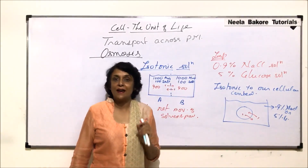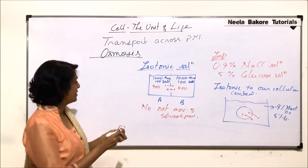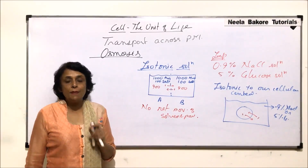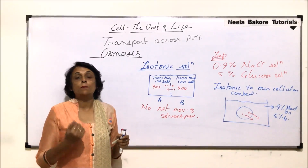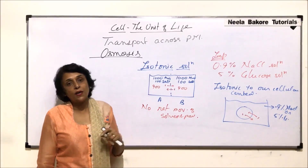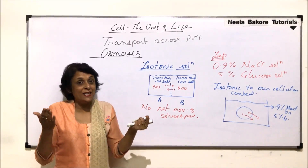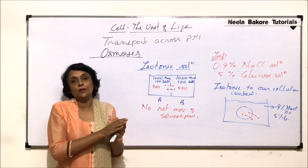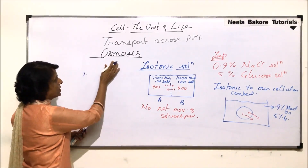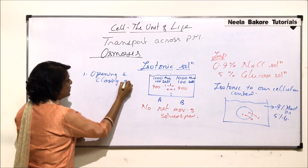Now let us take applications where osmosis is important. First: opening and closing of stomata. Guard cells take in potassium ions, which increases solute concentration, making them hypertonic. Water from the subsidiary cells, which are now hypotonic, moves into the hypertonic guard cells. The guard cells become turgid and stomata open.